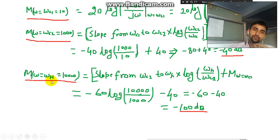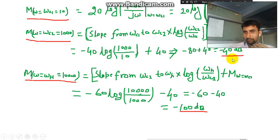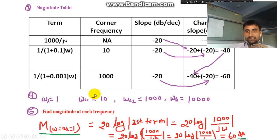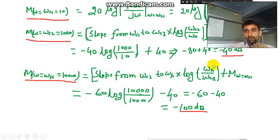This pattern continues for any number of terms. The formula for ωh is: slope from ωc2 to ωh × log(ωh / ωc2) + magnitude at ωc2. After ωc2 the slope is −60 dB/decade. So: −60 × log(10,000/1000) + (−40) = −60 × log(10) + (−40) = −60 × 1 + (−40) = −60 − 40 = −100 dB. The magnitude at ωh = 10,000 is −100 dB.